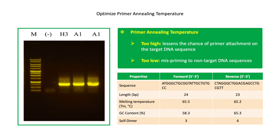One of the most important factors in dealing with PCR primers is the optimization of the annealing temperature on the PCR thermal cycling condition. The annealing temperature induces the attachment of the primers on the target DNA sequence. Too high an annealing temperature may lessen the chances of primer attachment on the target DNA sequence. On the other hand, a very low annealing temperature may cause mispriming to non-target DNA sequences, which is evident as several non-specific bands appearing after gel electrophoresis. The highest annealing temperature where primers are observed to anneal should be used to ensure specificity to the target gene.